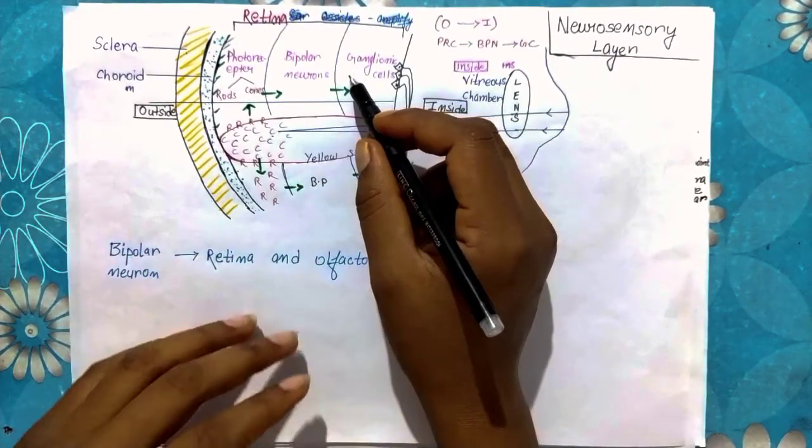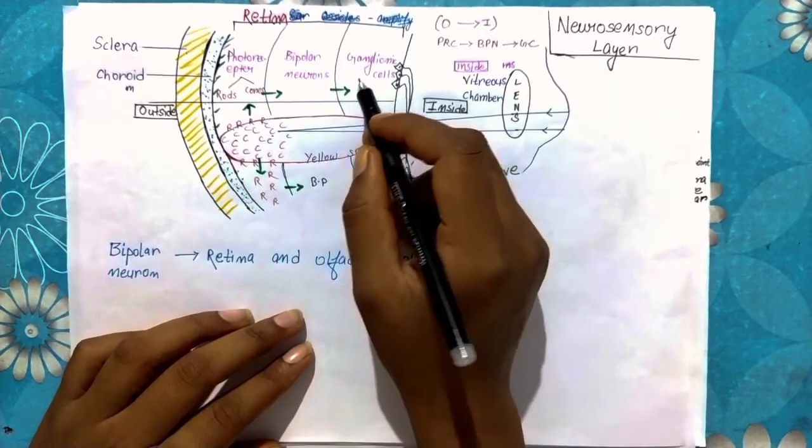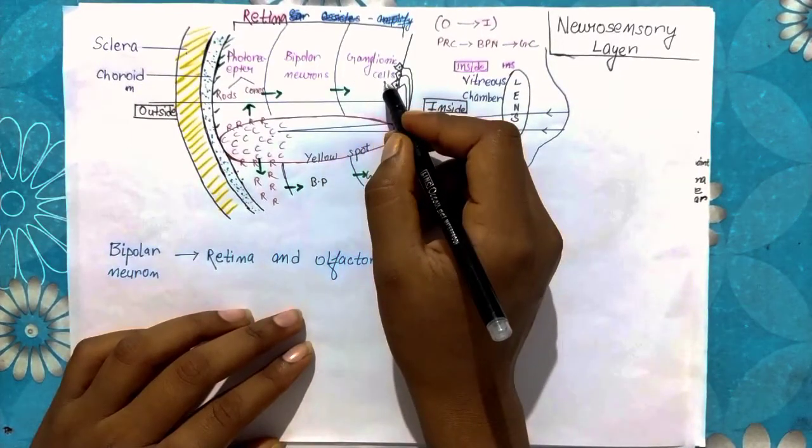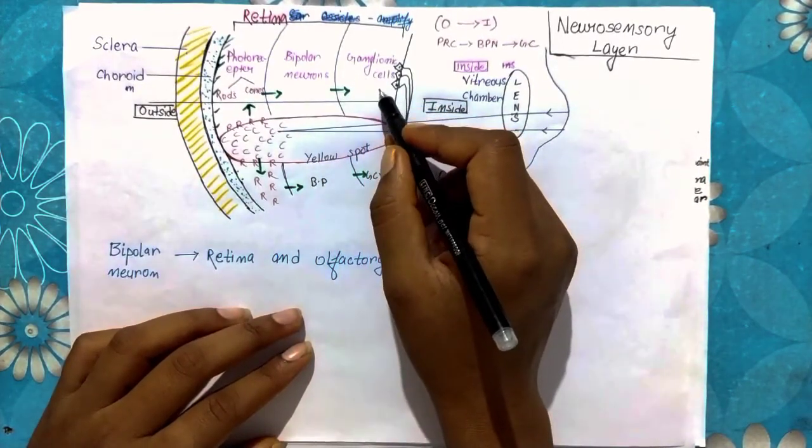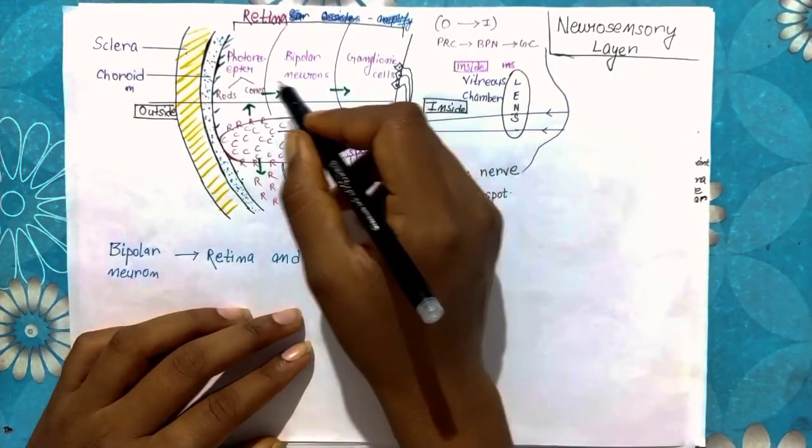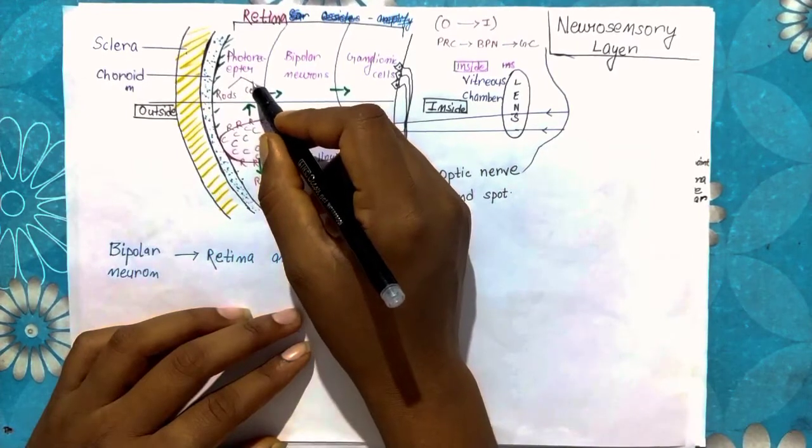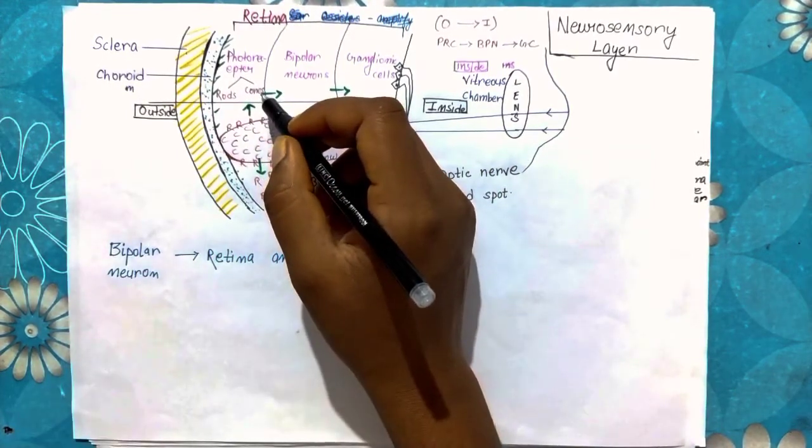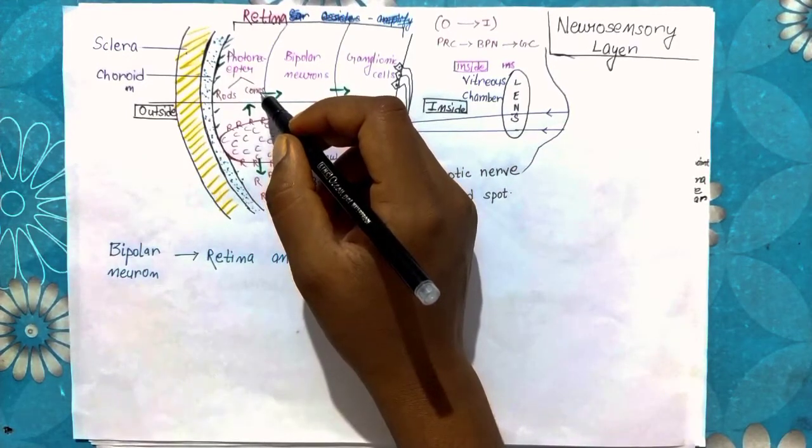So we have to learn the retina. What are the details of the retina? There are three types of cells present in the retina. First is ganglionic cells, second is bipolar neurons, and the third is photoreceptor cells. Why are they called photoreceptor cells? Because they are light sensitive.